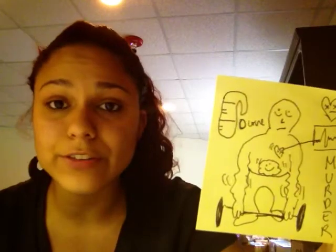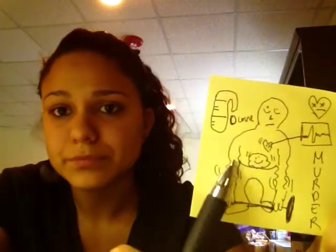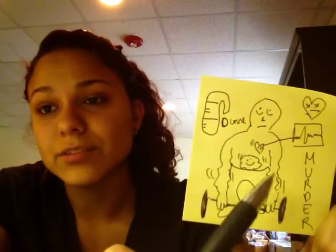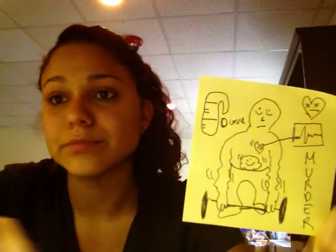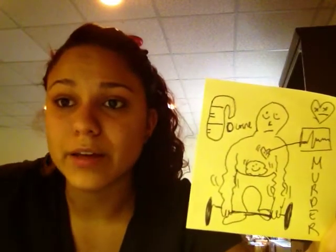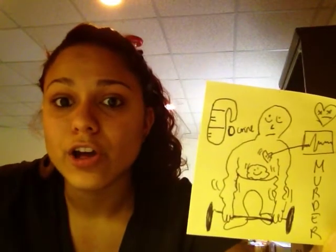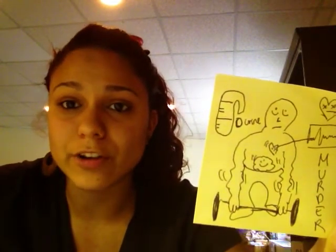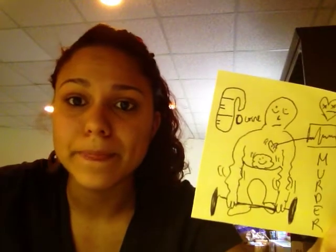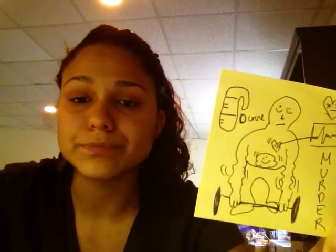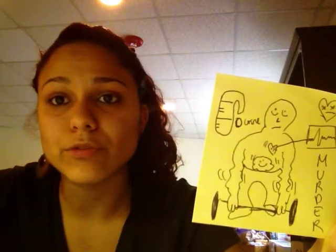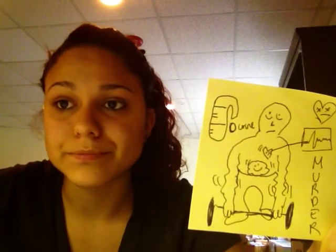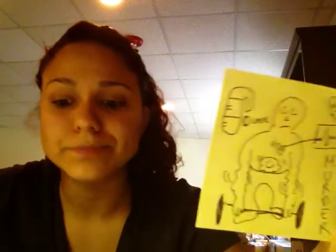E is for ECG changes, as you can see here. There's going to be a lot of changes that can be dangerous. And R is going to be for the reflexes that are decreased. So, we have to watch for hyperreflexia as well.